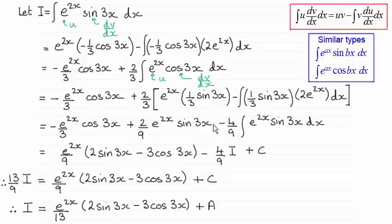Expand the bracket and clean up this integral here. And you'll notice that what we've got again is this integral, which we called i. So what we've got now is minus 4 ninths i.